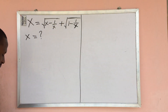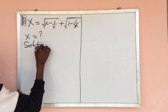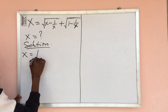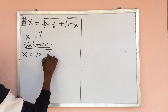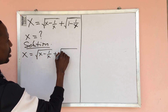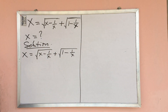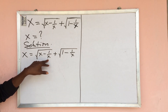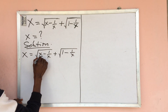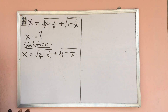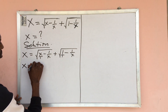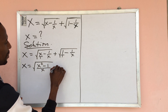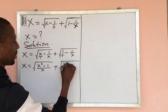Let's dive into this challenge. We put down our question, which is x equal to the square root of x minus 1 all over x, plus the square root of 1 minus 1 all over x. Now we can rewrite this by looking for the LCM of the denominator. Finding the LCM gives us x squared minus 1 all over x, plus the square root of x minus 1 all over x.